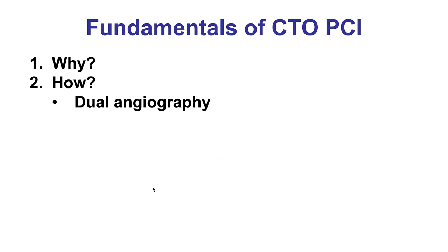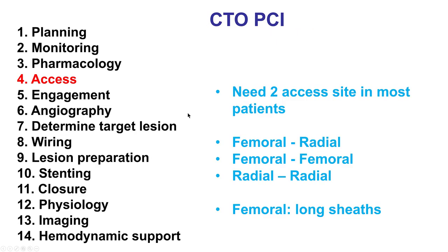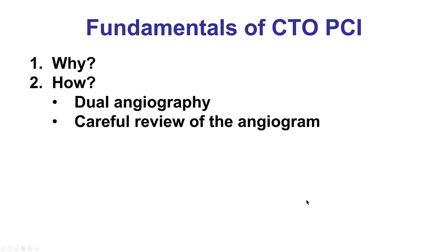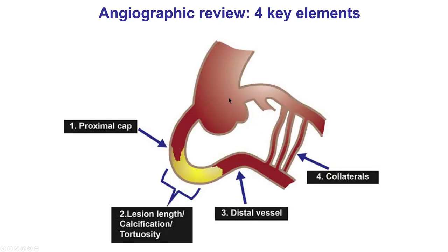The next fundamentals concern the technical aspects of the procedure. The first key principle is dual angiography and careful angiographic review. We need a two-access-point setup in most patients, and a variety of configurations can be used — bifemoral, biradial, or femoral-radial. Having the dual angiogram provides a better understanding of the occlusion and helps guide CTO crossing attempts.